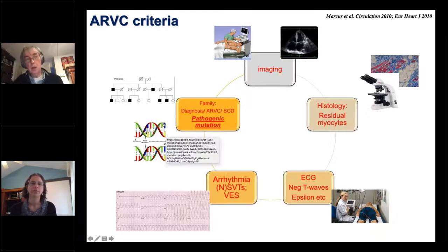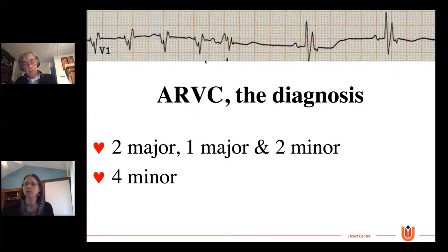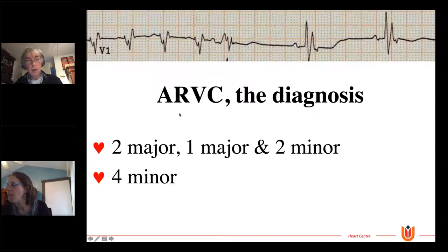The Task Force criteria are from several domains. They are from the imaging site, echo or MRI. They can be from histology, but histology is rarely available. The EKG is a very important feature in the diagnosis of arrhythmogenic right ventricular cardiomyopathy. It involves negative T-waves in the right precordial leads and epsilon waves. For the diagnosis of ARVC, you need two major criteria, or one major and two minor, or four minor criteria.